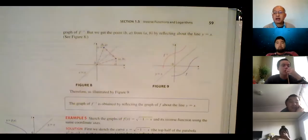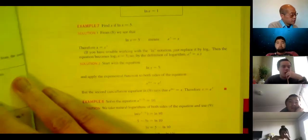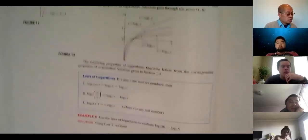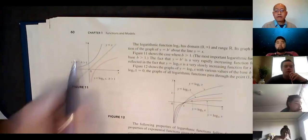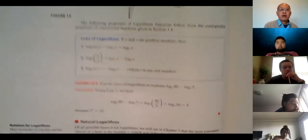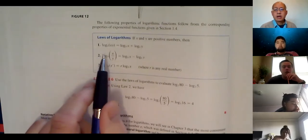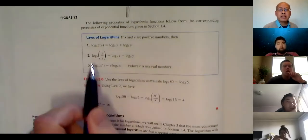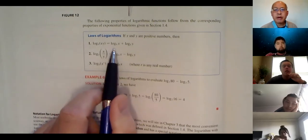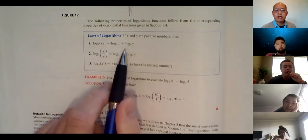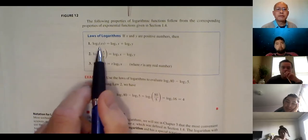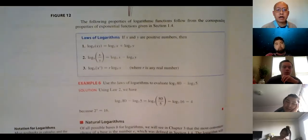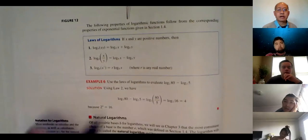That leads to this property: if you have an exponential followed by a log or vice versa, they cancel each other out. So log base b of (b to the x) equals x, and b raised to the (log base b of x) equals x. That's an exponential followed by a log, or a log followed by an exponential. As long as they're the same base, you have these cancellation laws. Properties of logs from pre-calc: the log of a product is the sum of the logs — log base b of (x times y) equals log base b of x plus log base b of y.